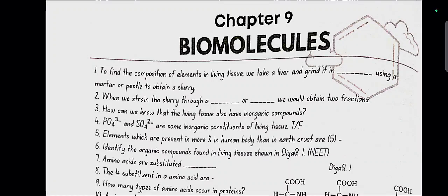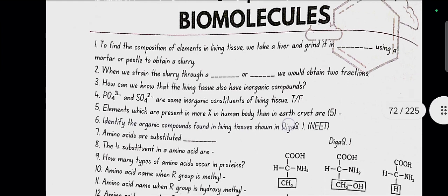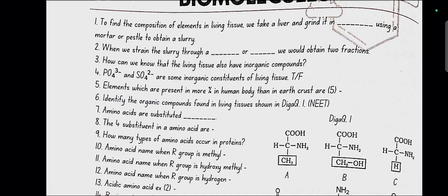Chapter 9 Biomolecules. To find the composition of elements in living tissue, we take a liver and grind it in trichloroacetic acid using a mortar or pestle to obtain a slurry. When we strain this slurry through a cheesecloth or cotton, we would obtain two fractions.